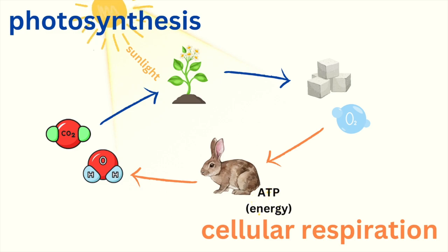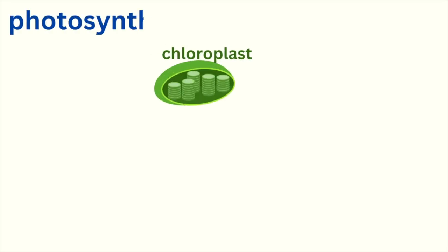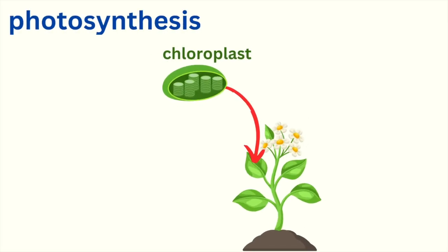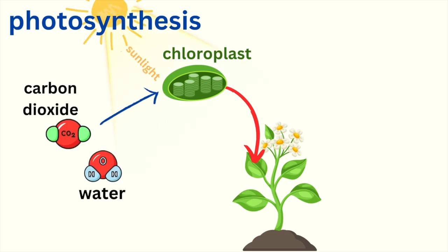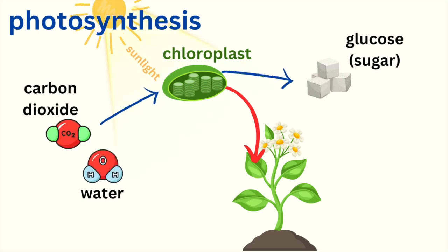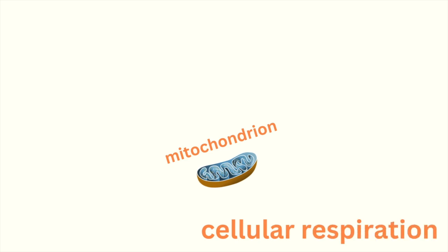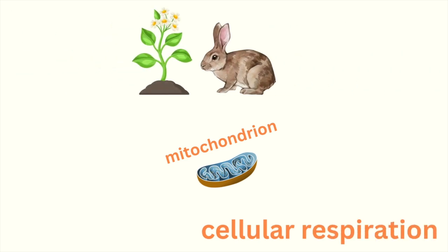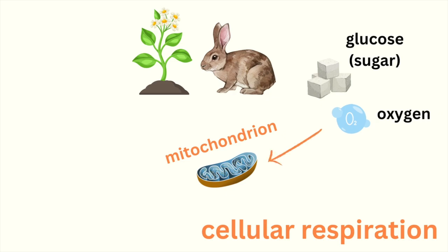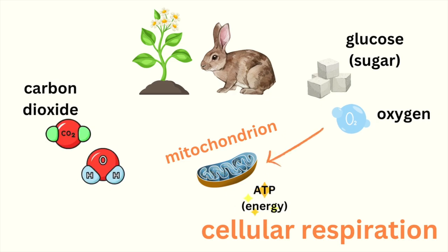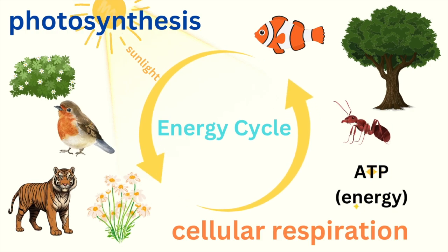Let's recap. Photosynthesis happens in the chloroplasts of plants, using sunlight, carbon dioxide, and water to make glucose and oxygen. Cellular respiration happens in the mitochondria of cells in both animals and plants, using glucose and oxygen to release energy, with carbon dioxide and water as waste products. Together, photosynthesis and cellular respiration keep life on Earth going.